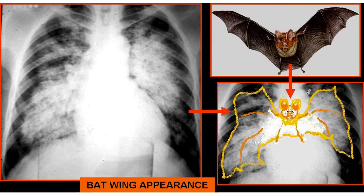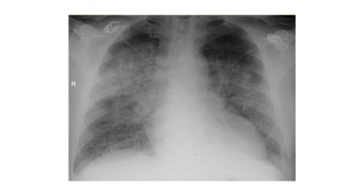You can see why we call it the bat wing sign — it resembles a bat. This is pulmonary edema; it is a frequent disease. If you don't act with accuracy and promptness the patient can die, but if you act very fast the patient can survive easily. This is another chest X-ray showing pulmonary edema and the bat wing sign.